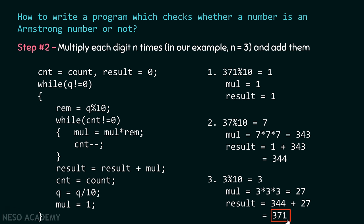Let's understand the logic we followed. We multiplied digit 1 three times, digit 7 three times, and digit 3 three times — effectively multiplying each digit n times (where n is 3). Then we added them all together, and the final result is 371. This confirms the logic is correct.